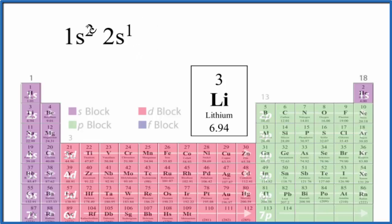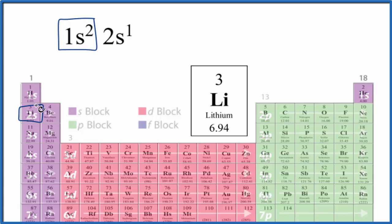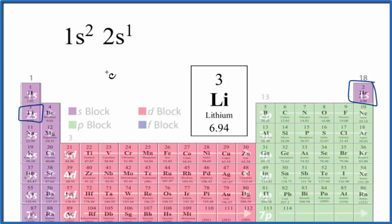Lithium is right here on the periodic table. The first energy level has two electrons in it, but it's full — after one, two, you have to go to the next energy level, which would be 2s1. These numbers need to add up to three. To write the condensed electron configuration for lithium, we go back to the noble gas before it — that's helium, which is 1s2. We just put this in brackets.